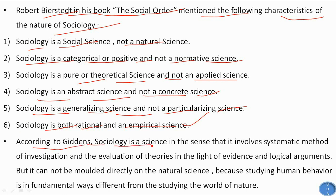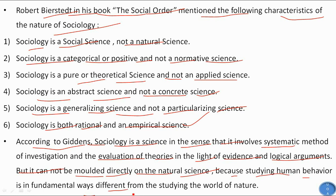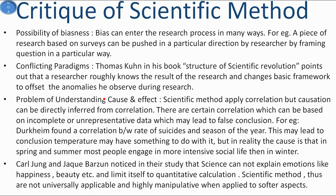According to Giddens, sociology is a science in the sense that it involves systematic methods of investigation and evaluation of theories in the light of evidence and logical arguments. But it cannot be modeled directly on natural science because studying human behavior is in fundamental ways different from studying the world of nature.